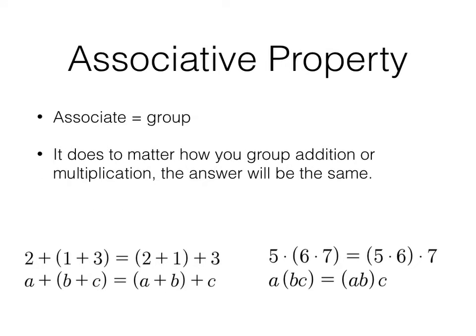The associative property is next. The people you associate with are your group of friends. So that is one way to remember this, that you associate with your group. It does not matter how you group addition or multiplication. The answer will be the same as long as it is all addition or all multiplication. And again, there are examples that you should have in your notes to help you work on recognizing. This is 2 + (1 + 3) = (2 + 1) + 3. a + (b + c) = (a + b) + c. And then you have the same thing with the product here.